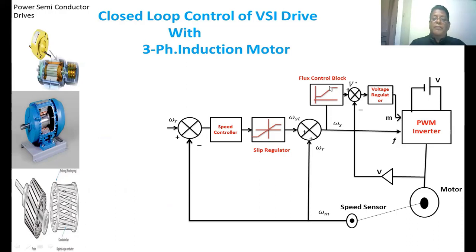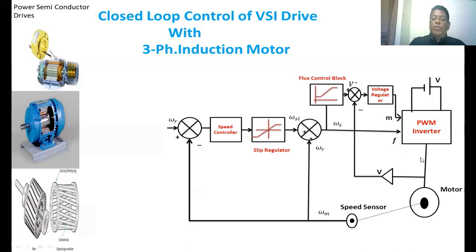The input to the flux control block is the synchronous speed. Dividing by 2π gives the frequency. For a given frequency, the flux control block generates a reference voltage. If the frequency is less than the rated frequency, then V/F is kept constant, and the reference voltage is set accordingly. This reference voltage is compared with the actual measured voltage. The error in voltage is given to the voltage regulator, which is also a PI controller. The output of the voltage regulator is the modulation index, which is given to the PWM inverter. If the modulation index changes, the voltage applied to the induction motor also changes.